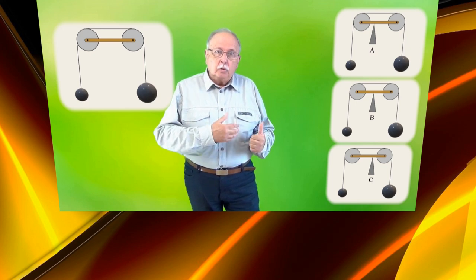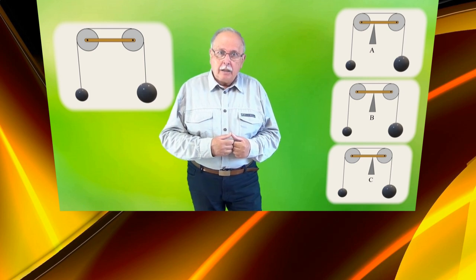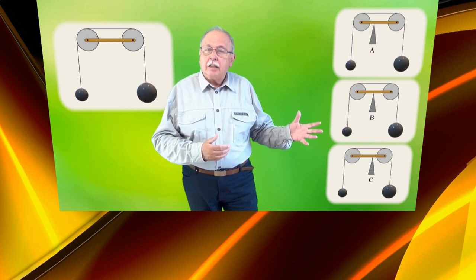Here you can see three different ways to support it. In case A, the support point is closer to the light ball. In case B, the support point is at the middle of the lever. And in case C, the support point is closer to the heavier ball. The lever is in equilibrium in only one of these three cases. Which one is it?